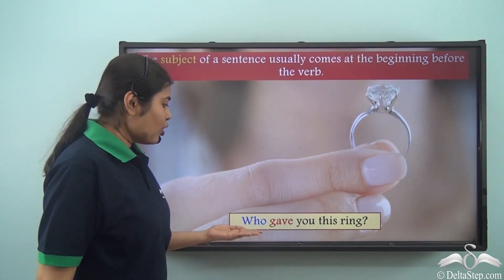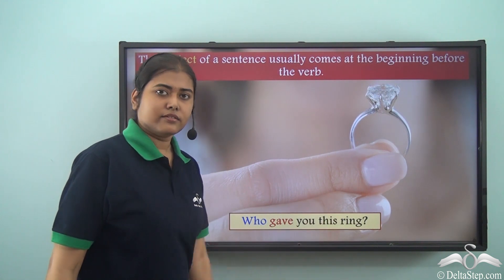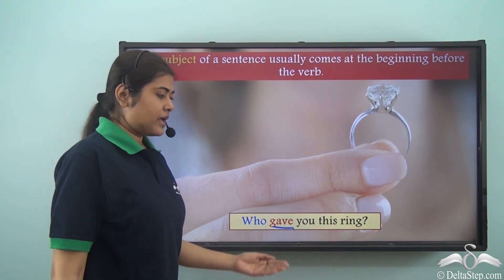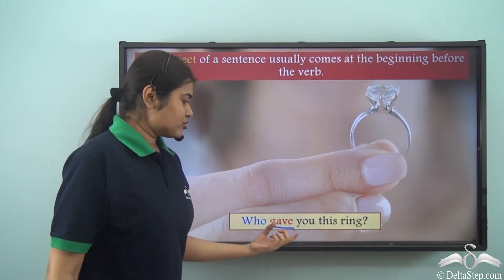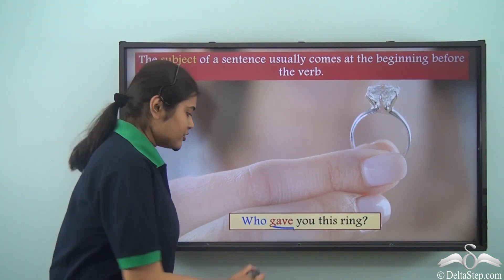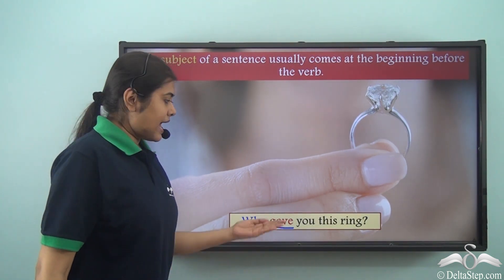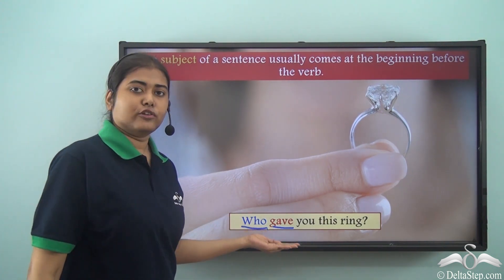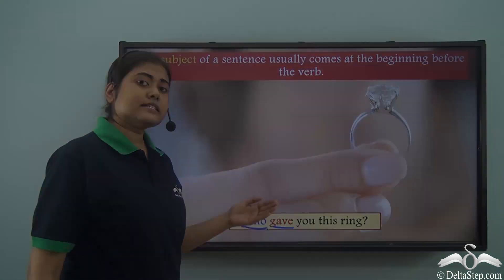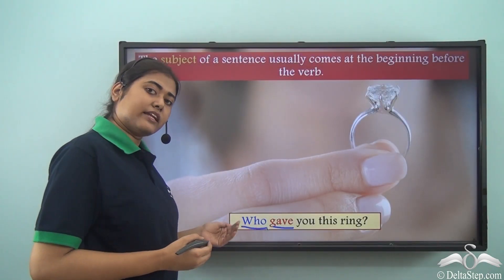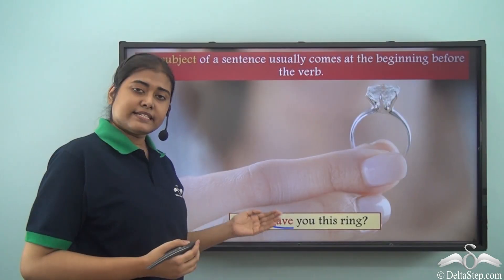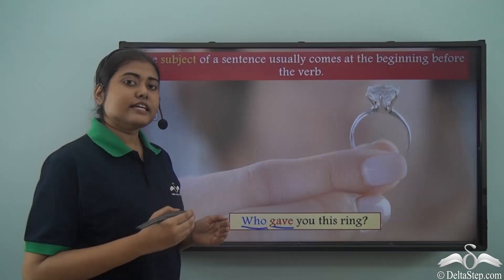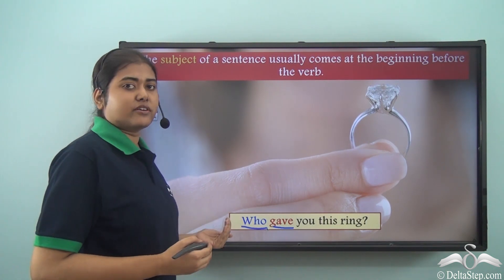'Who gave you this ring?' Now this is a question. In this case, 'gave' is the verb. And who gave you this ring? 'Who' — this word itself is the subject, and we see that 'who' is right at the beginning of the sentence, followed by the verb. So in most cases the subject is placed at the beginning of a sentence, and in all these examples the subject has come before the verb.